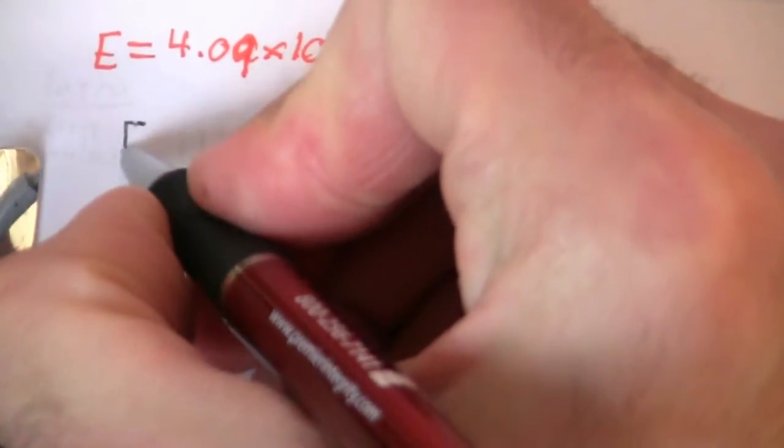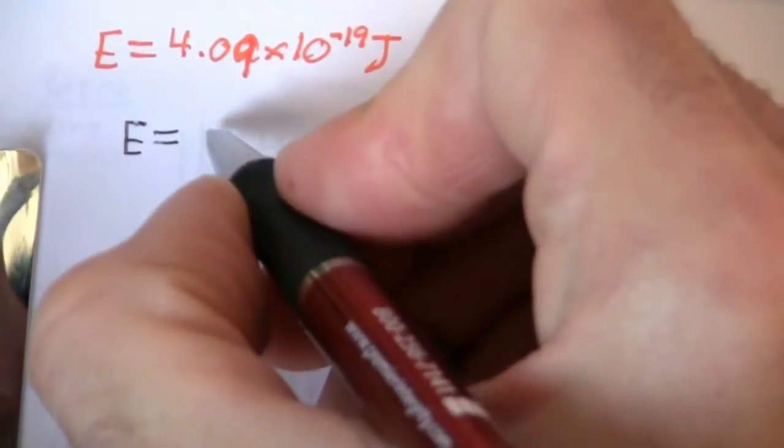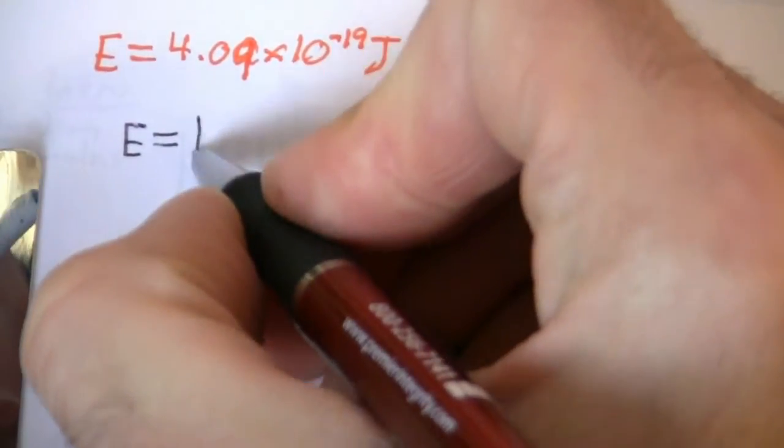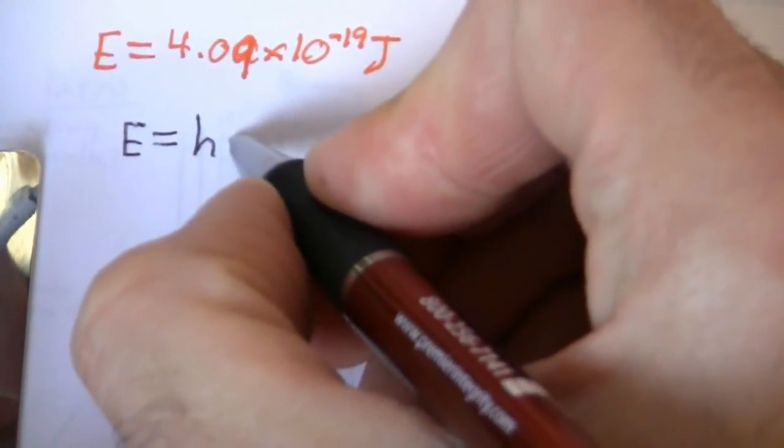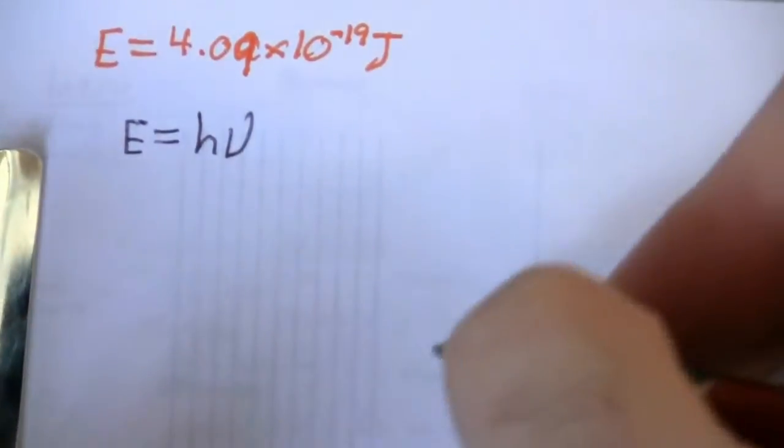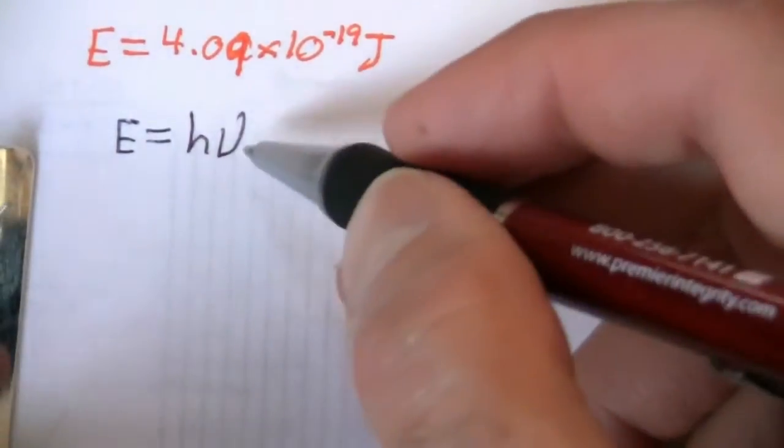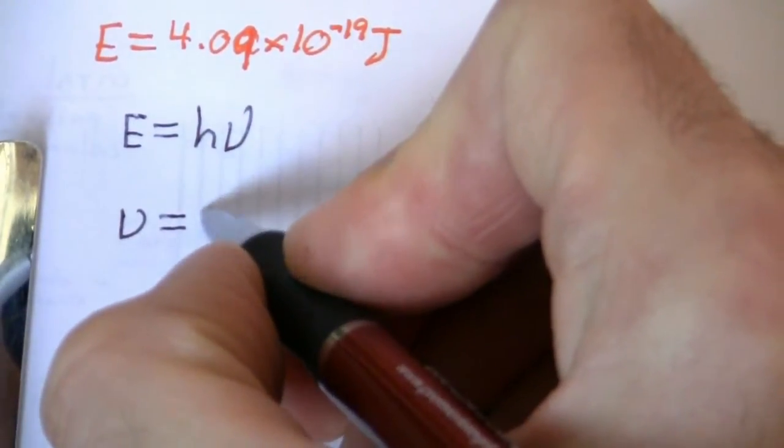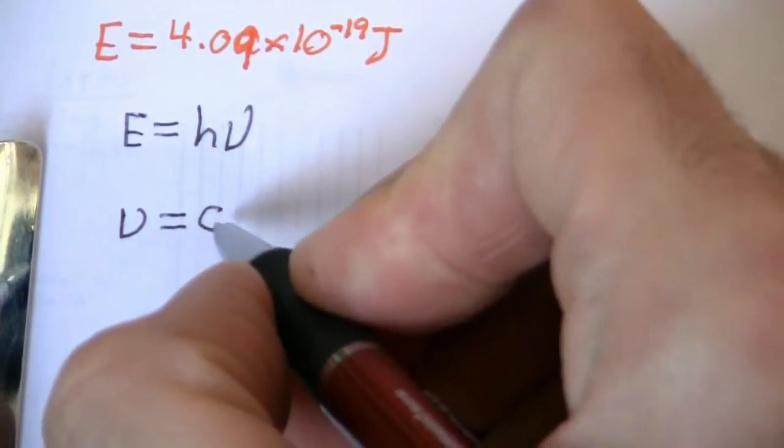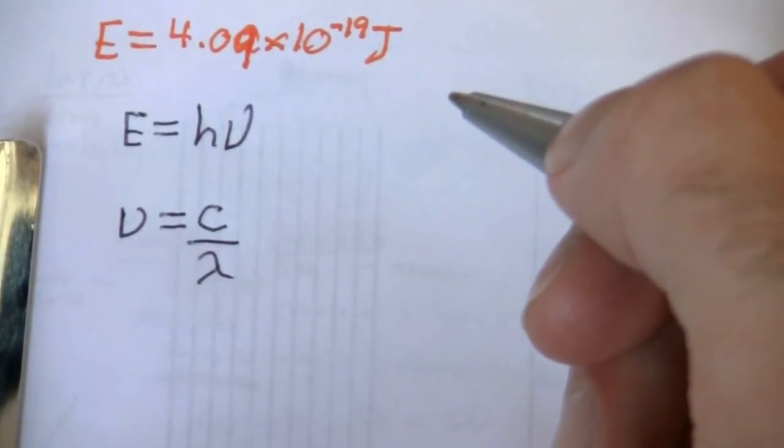Now there's a couple of relations that you need to know. The first is that energy is equal to Planck's constant h times, not wavelength, but the frequency. E equals hν, the Greek letter nu. And the other relation says that ν equals the speed of light divided by the wavelength.